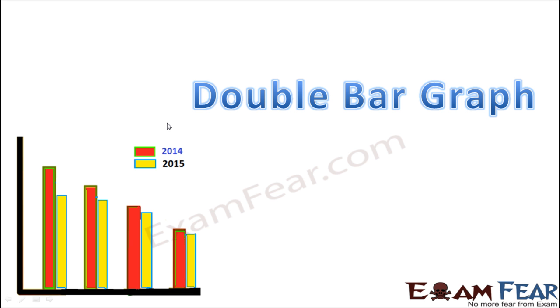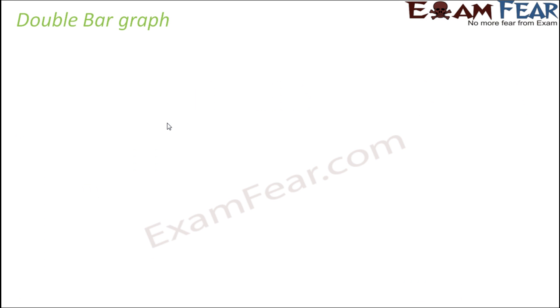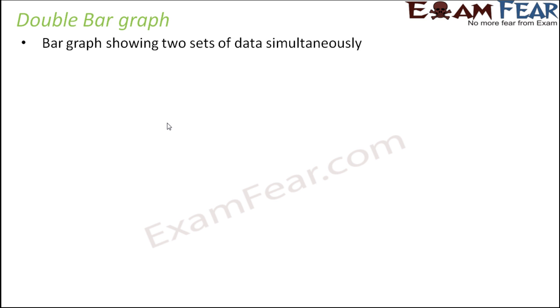Looking at the picture, you might have got some idea that instead of one bar, you have two bars joined together, and that is why it is called a double bar graph. A double bar graph is a bar graph showing two sets of data simultaneously — that's interesting.